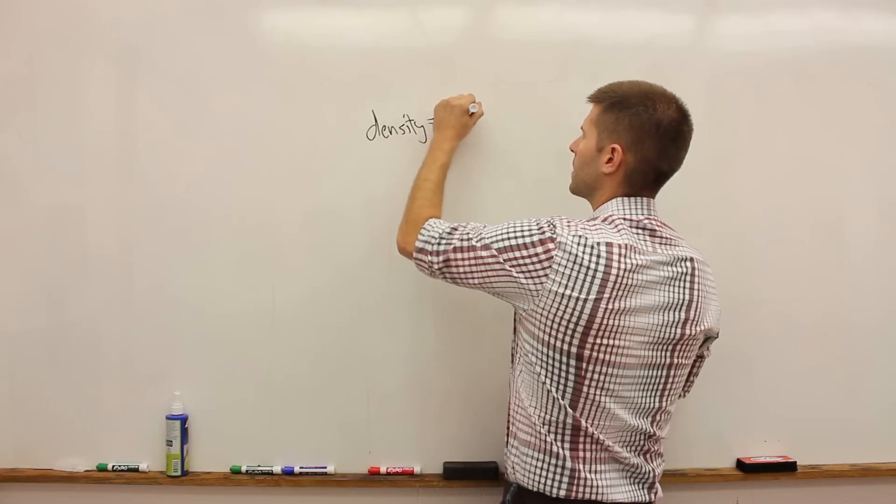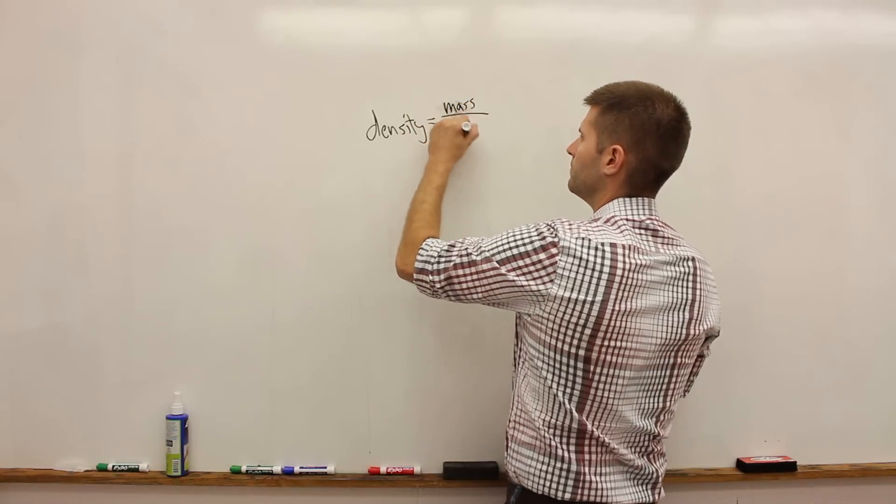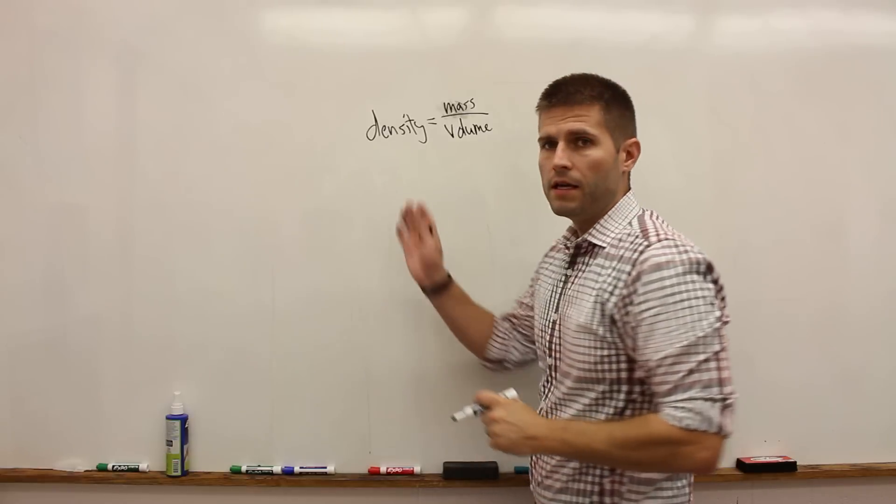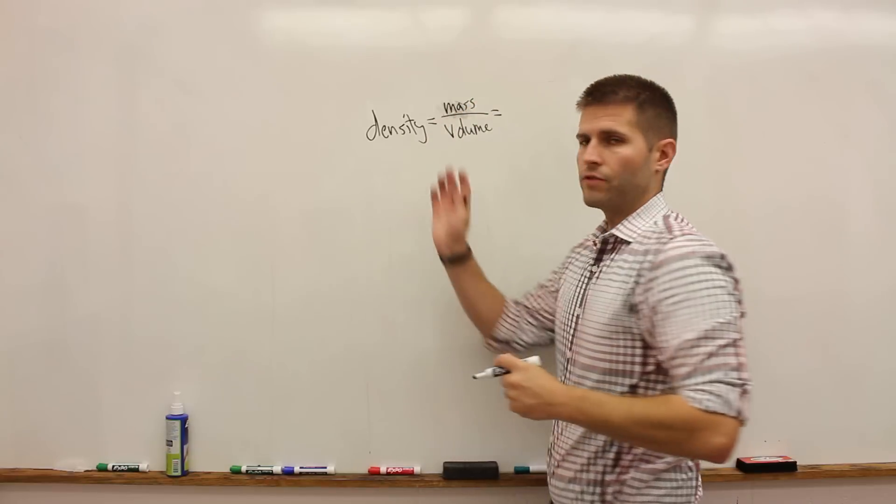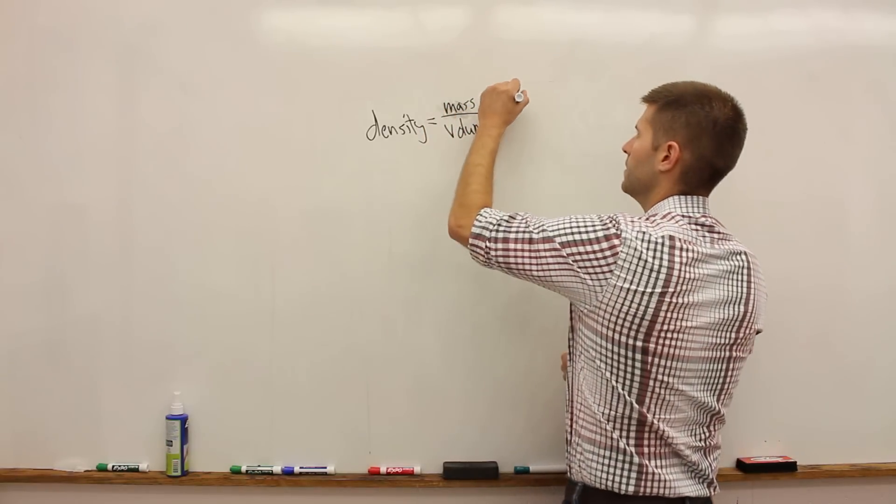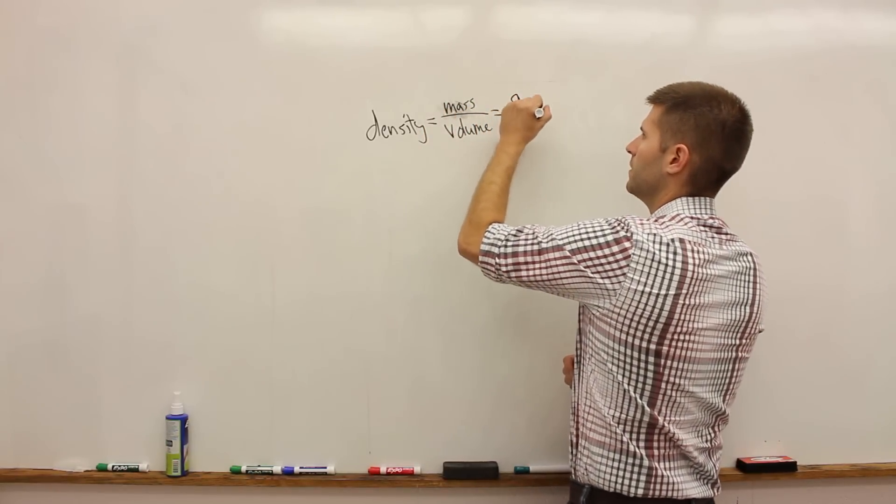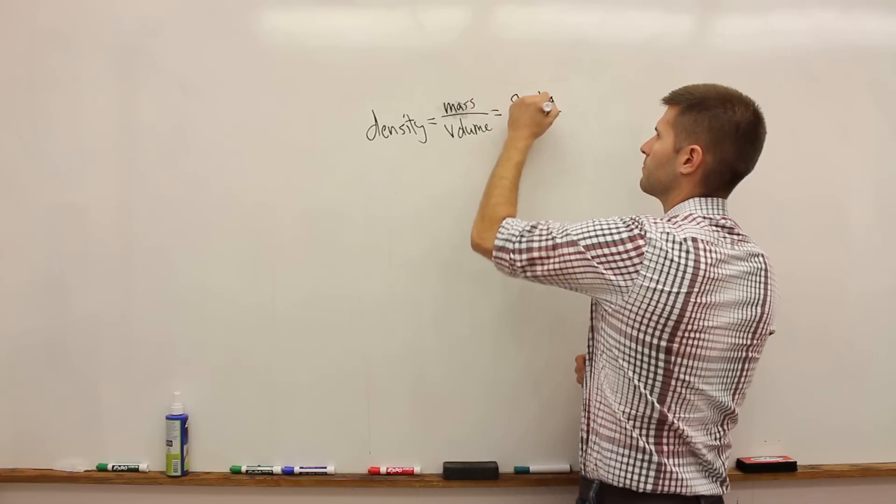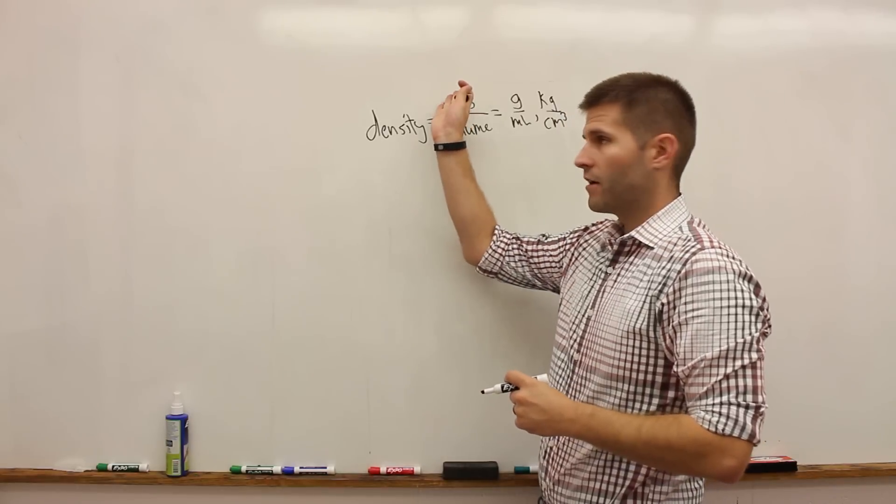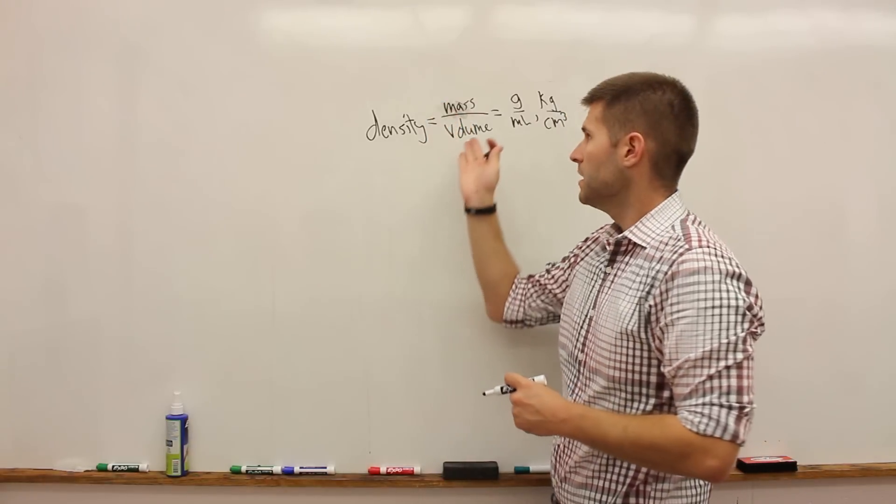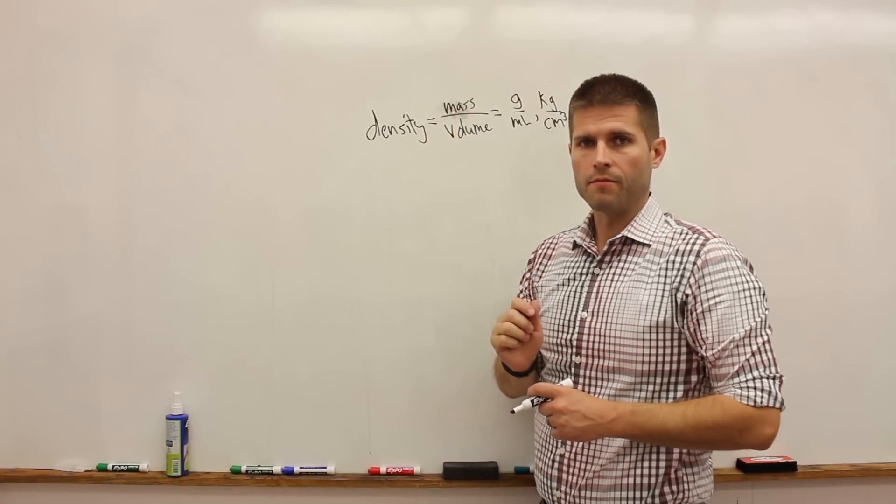The mass per volume. And the density units that we'll be dealing with can be anything that relates mass and volume, so it can be grams per milliliter, it can be kilograms per cubic centimeter. It can be anything that has a mass unit up on top and a volume unit down on the bottom.